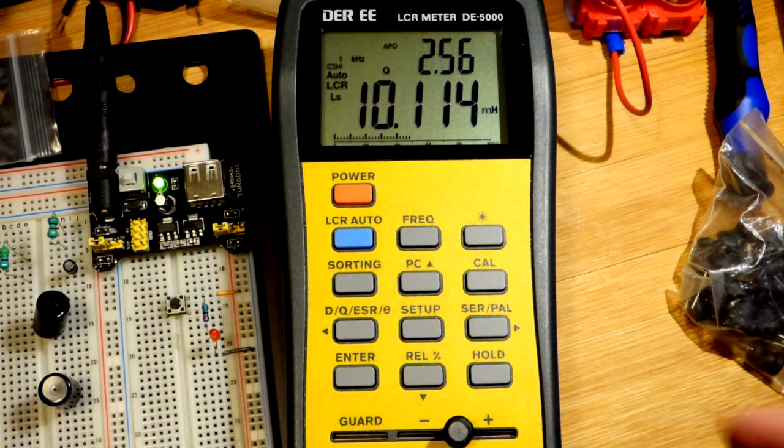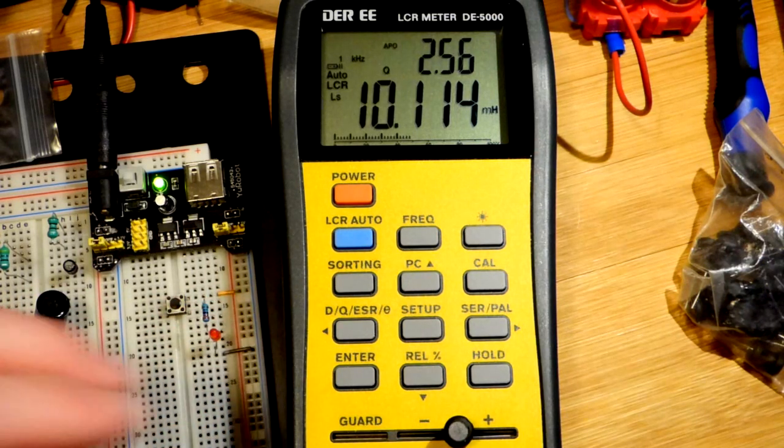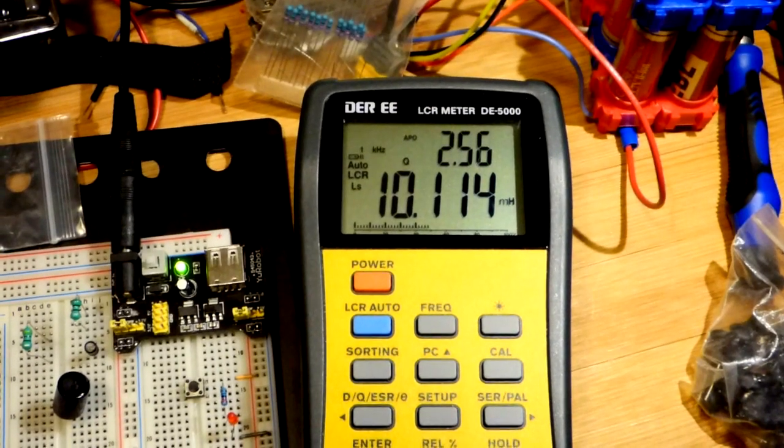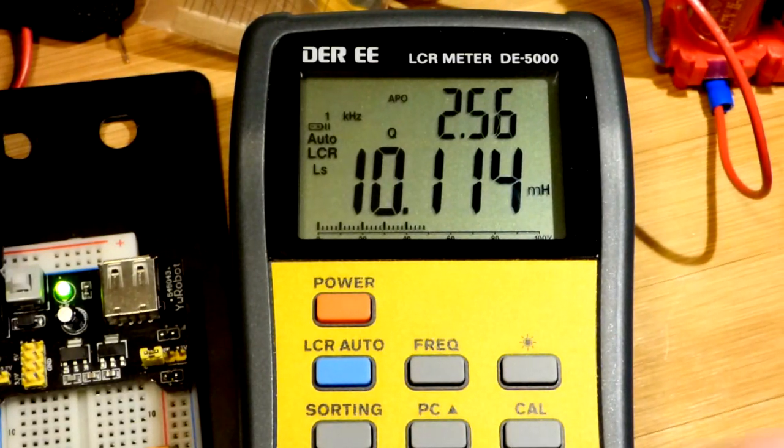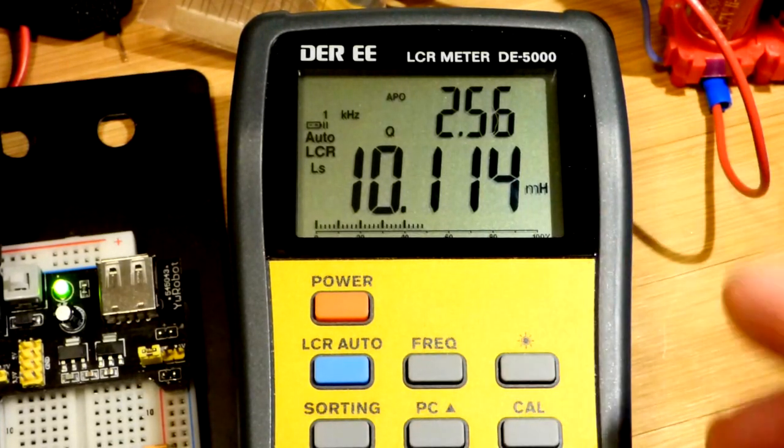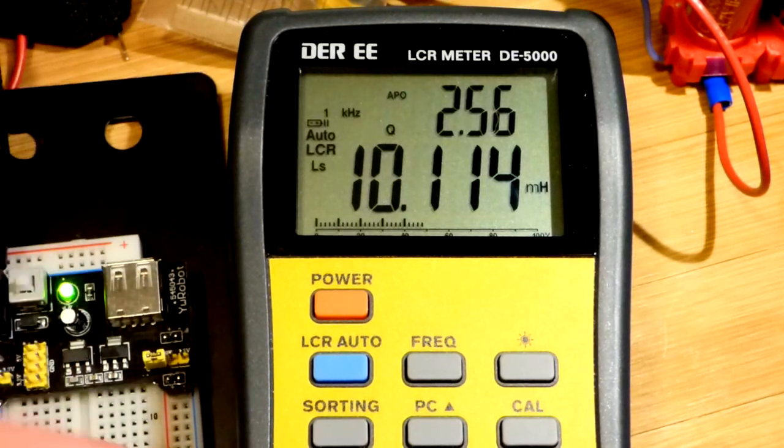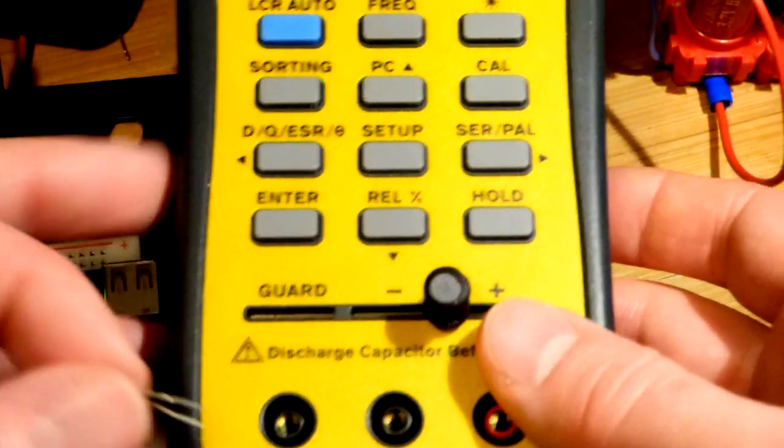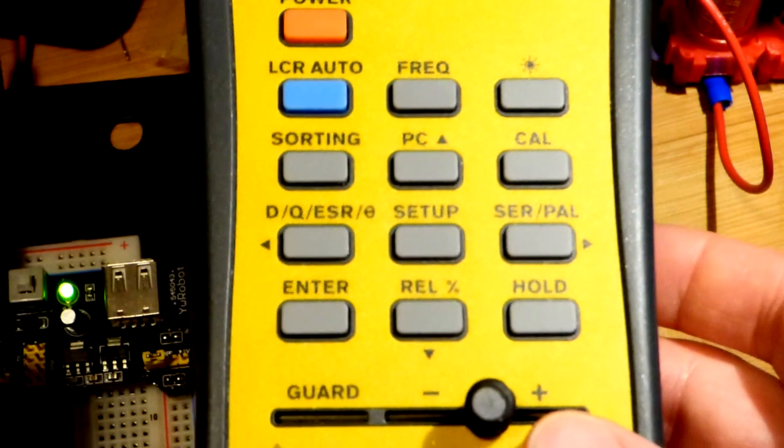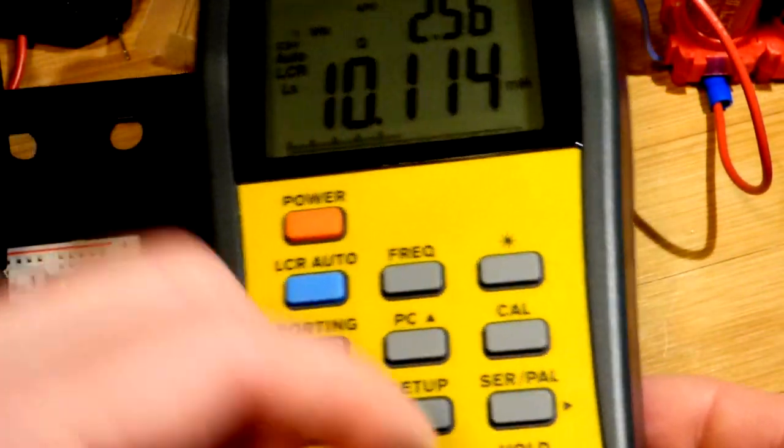We used the LCR meter and verified it was indeed 10 millihenry. Some sellers use MH for microhenry, so this is about the size you should expect for a 10 millihenry inductor.